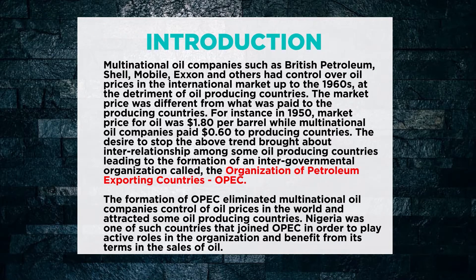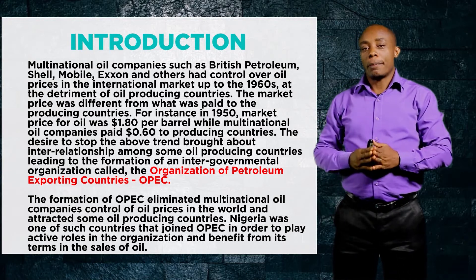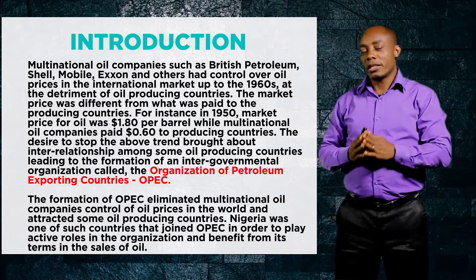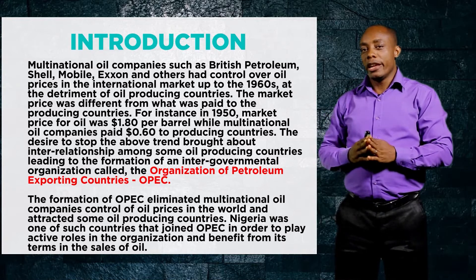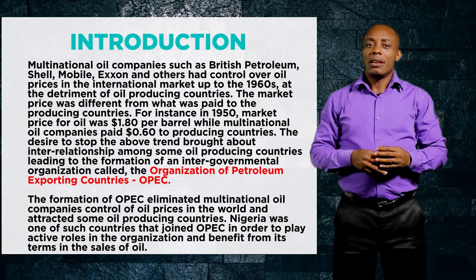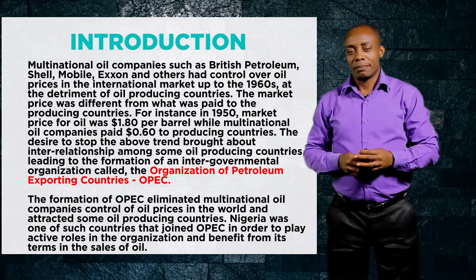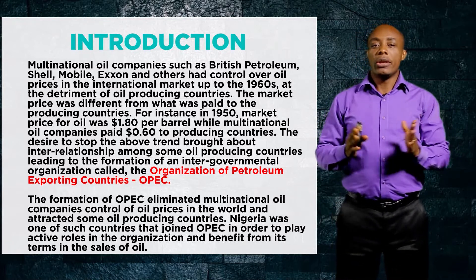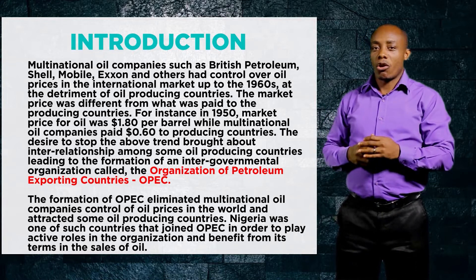Multinational oil companies were in charge of oil exploration and sale of oil in the international market up to the 1960s. The prices quoted on the international oil market were different from what these companies paid to oil-producing countries. For instance, in 1950, the price of oil per barrel was $1.80, but these companies were paying producing countries only $0.60 per barrel — a gain of about $1.20 per barrel. Some countries were not happy with this development and came together to form an organization to control oil prices on the international market.